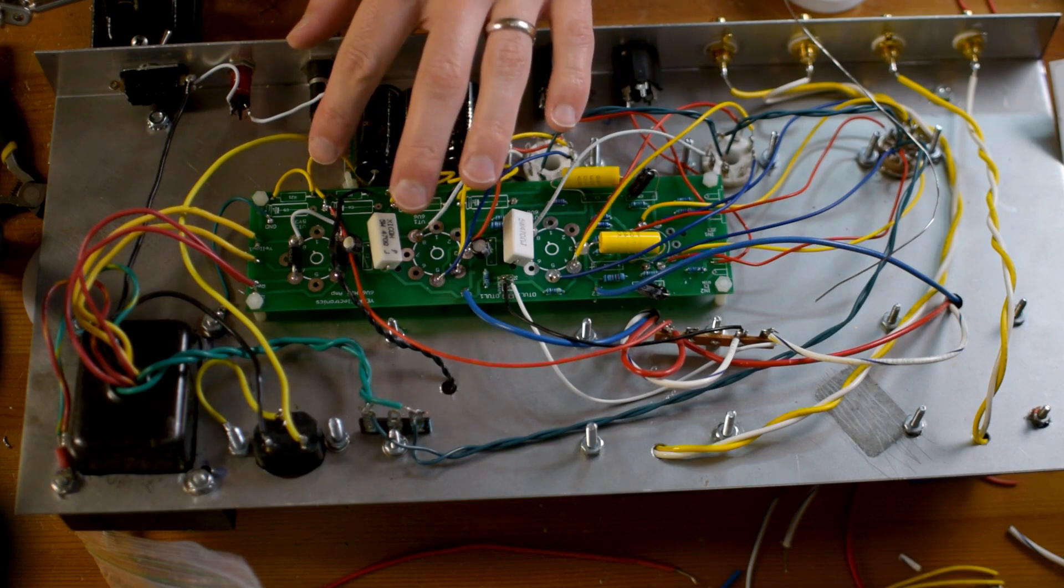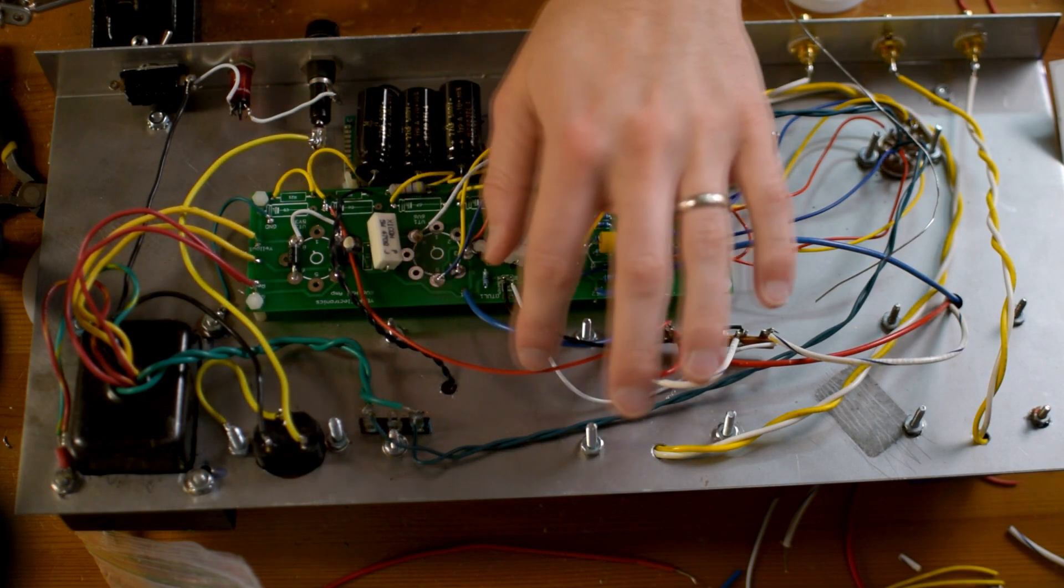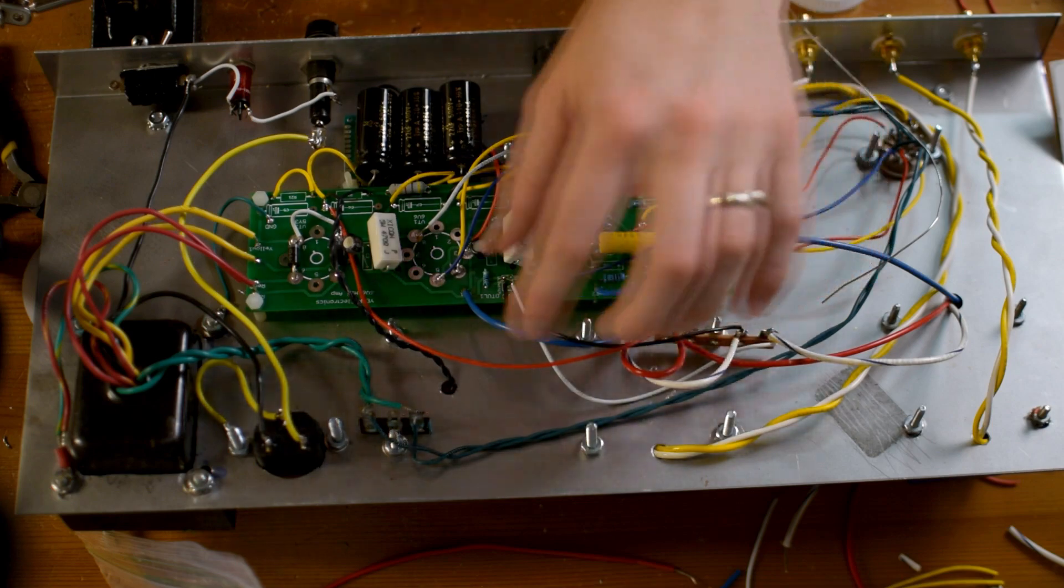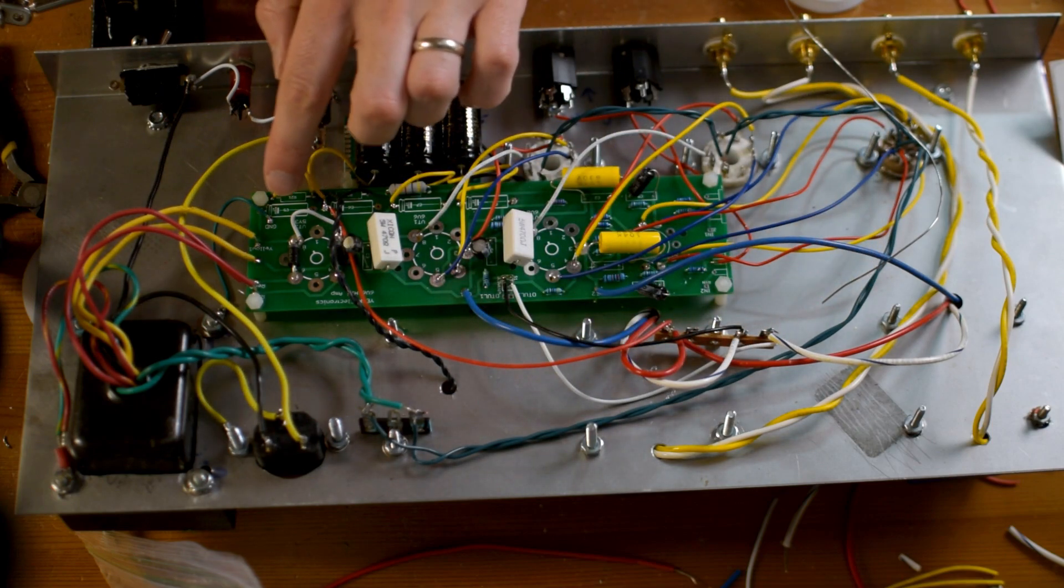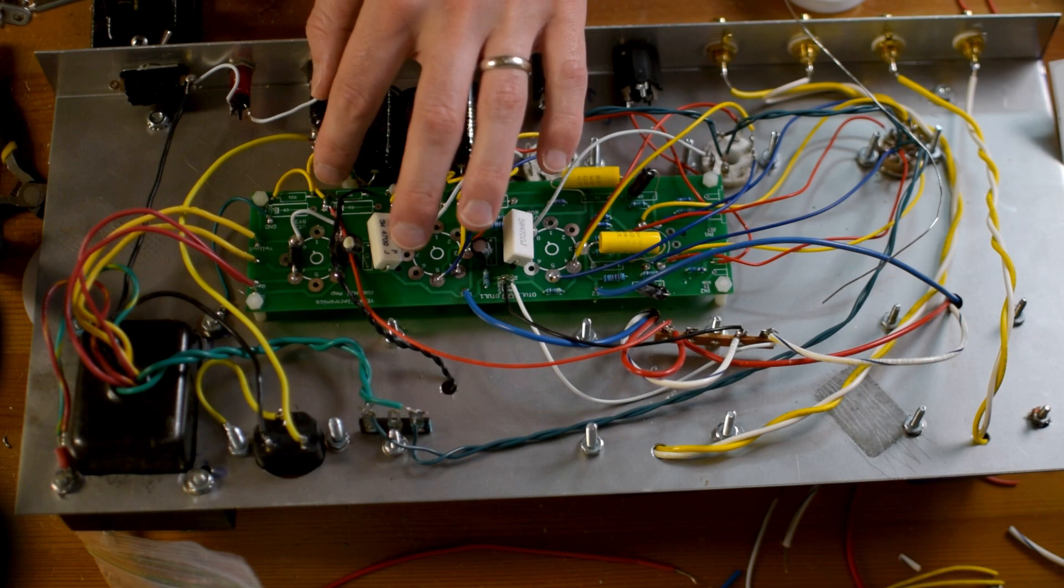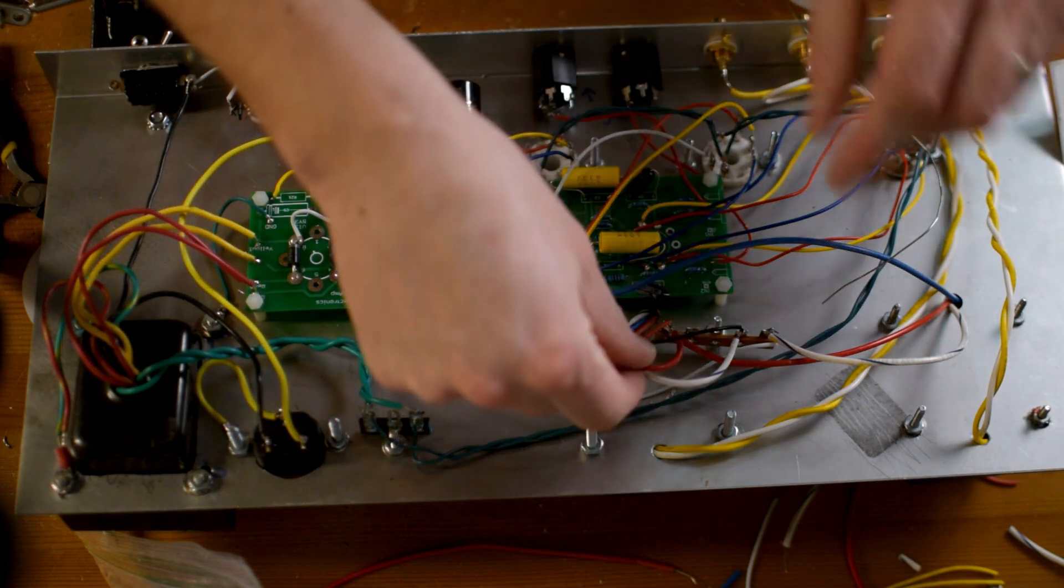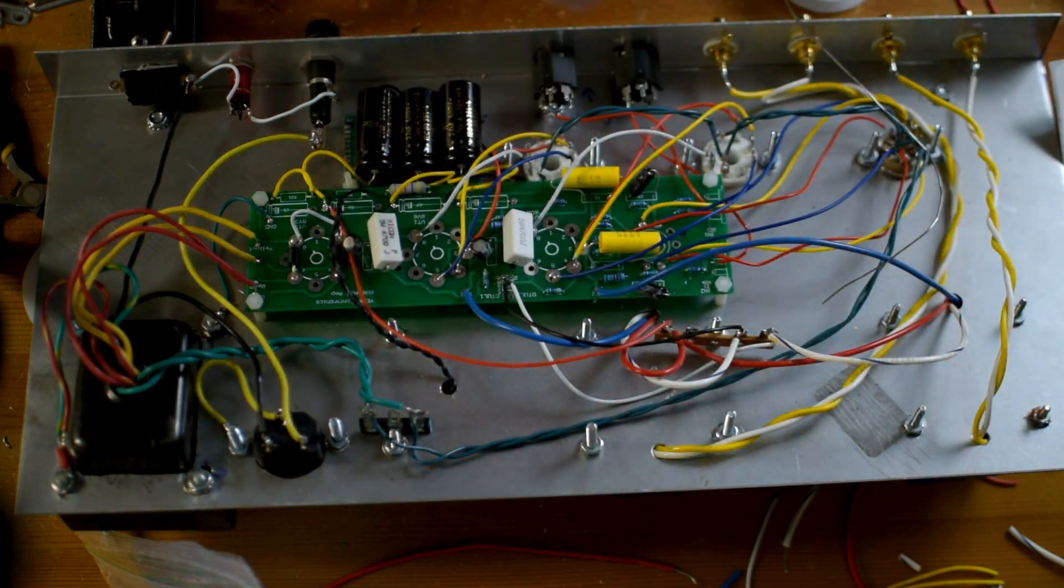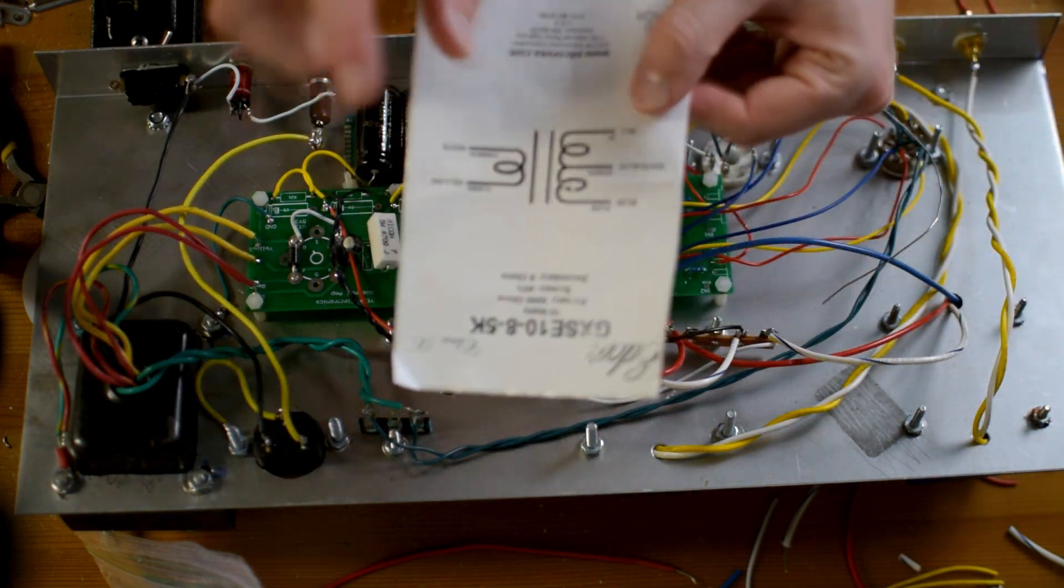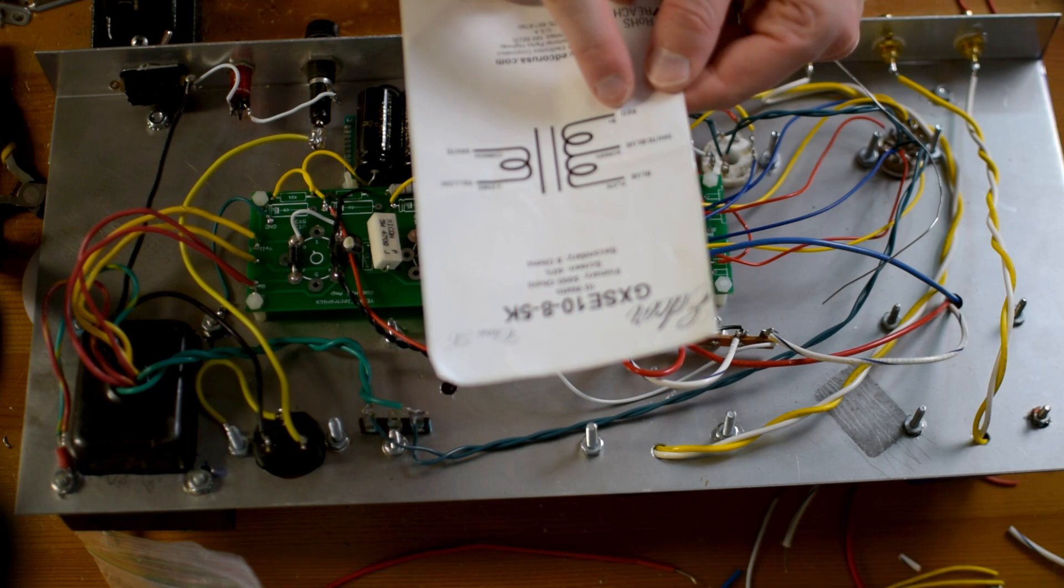All right, so now I have this B plus junction hopefully corrected. So my first stop of rectified B plus voltage is going to be traveling up into here and splitting into these two red wires, which is going to feed the B plus here on my output transformer.